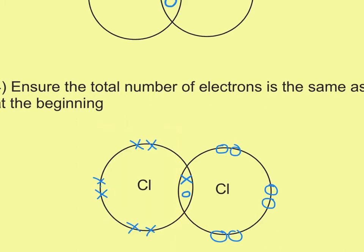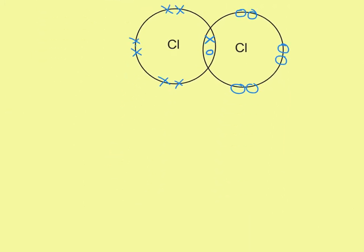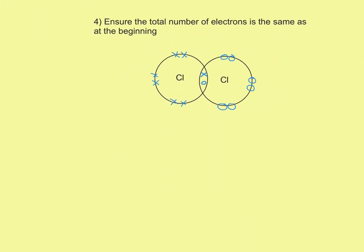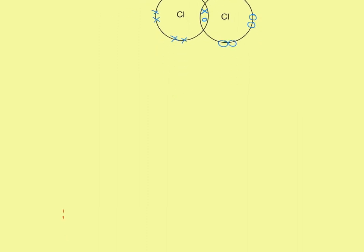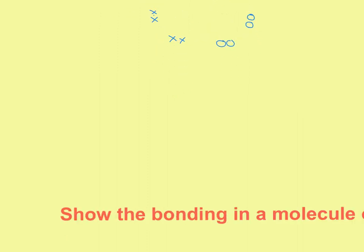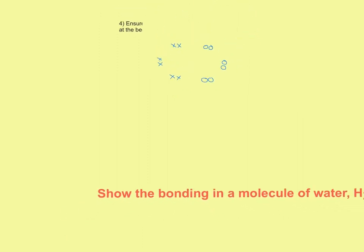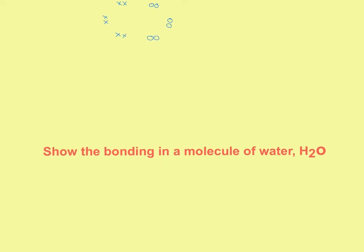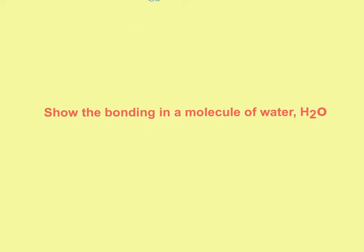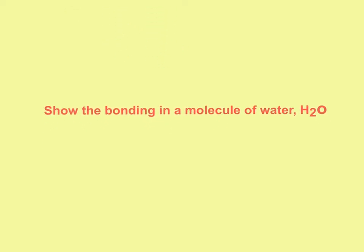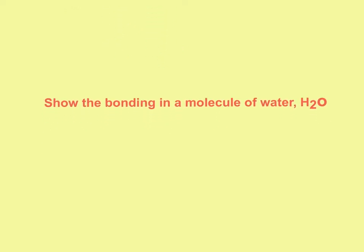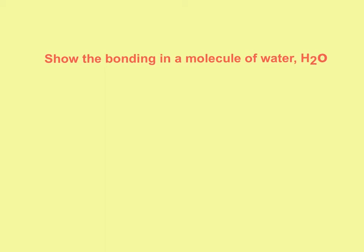Our second example is going to be a little bit more complicated — it's still the same process, but the question is more difficult. It says show the bonding in a molecule of water, H2O. So we're going to go through the same steps.